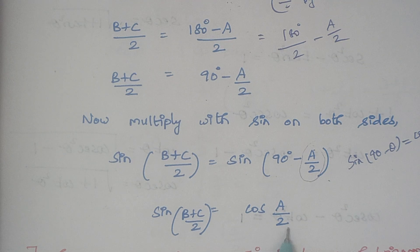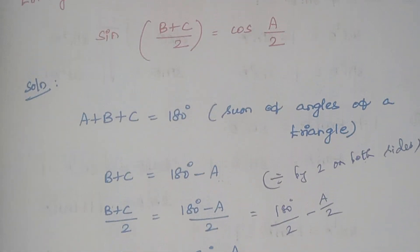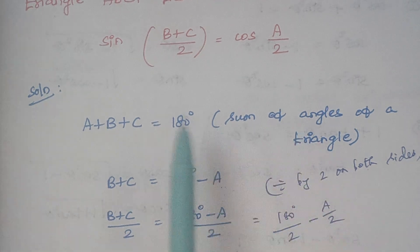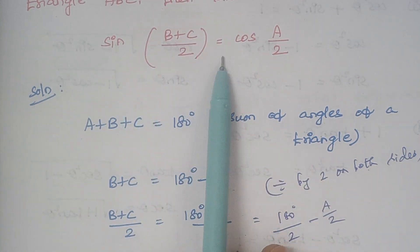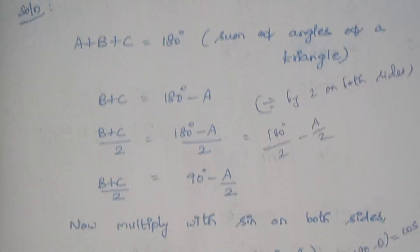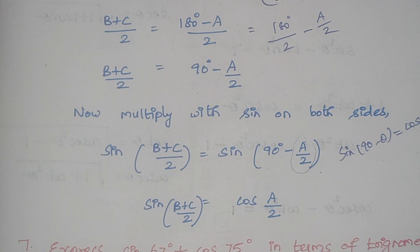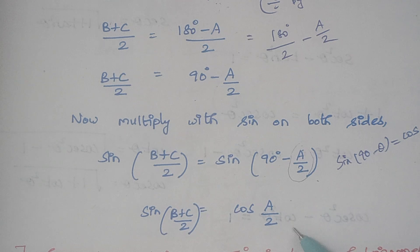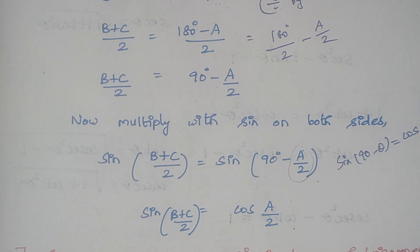So this is what we were expected to prove: sine((B plus C)/2) equals cosine(A/2), and this is exactly what we finally obtained. Therefore the problem is proved, and we move on to the next one.